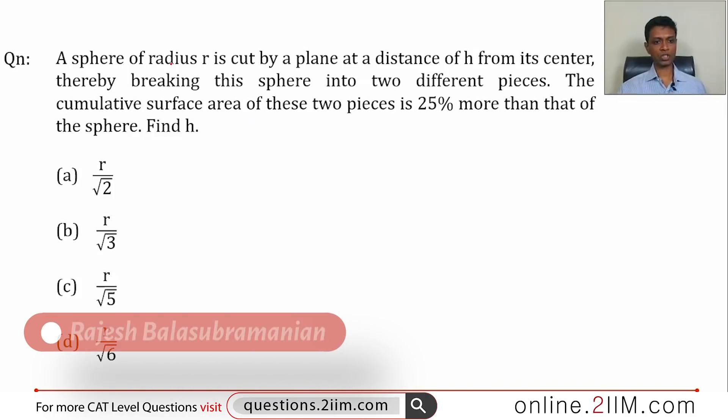Let's do this mensuration problem. A sphere of radius r is cut by a plane at a distance of h from its center, thereby breaking the sphere into two different pieces. You have a sphere cutting it off at a place h from the center, breaking into two different faces. The cumulative surface area of these two pieces is 25 percent more than that of the sphere. Find h.